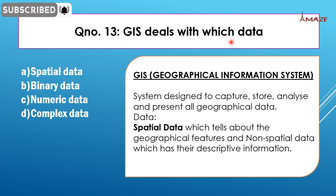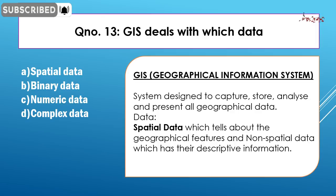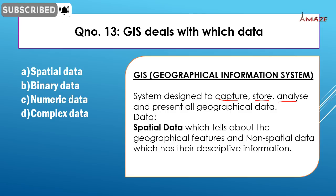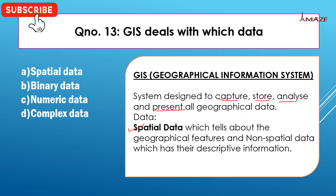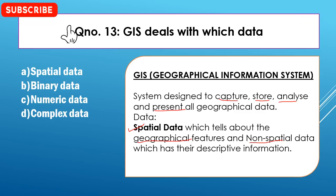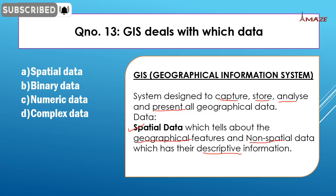GIS deals with which data? GIS stands for Geographical Information System. We capture, store, analyze, and present geographical data using software. The main data in GIS is spatial data, also called geographical data, used to describe topographical features. Non-spatial data also exists, but GIS primarily deals with geographical data.